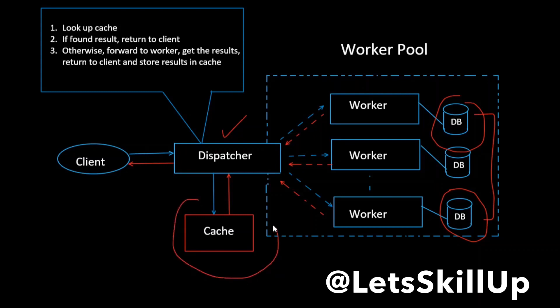If data is not found in the cache it will send the request to the worker pool where one of the workers will process the request, get the data from the database, and return it back to the client. The same data will be stored in the cache so that future requests can be served faster. This way we are able to speed up performance and reduce the load on our primary database servers. Caching is present at multiple levels in systems and it helps improve performance by providing faster access and assisting in scalability.